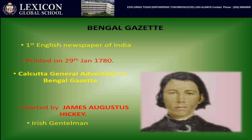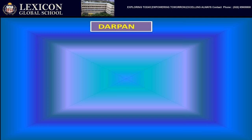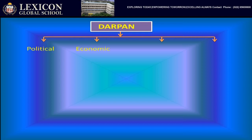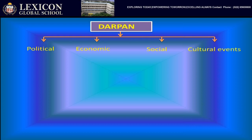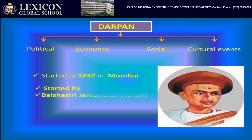The next newspaper we had studied was Darpan, which covered the news of political, economic, social and cultural events of the society. It was started in 1832 in Mumbai by Bal Shastri Jambhekar.